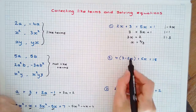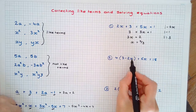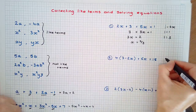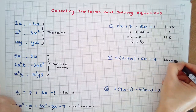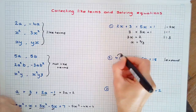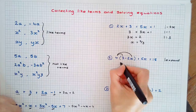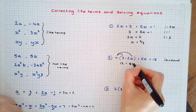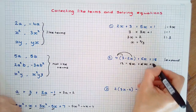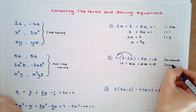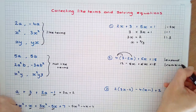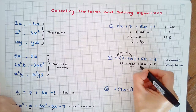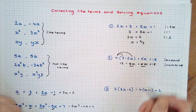Here we've got brackets and I can see that we're going to end up with like terms. First of all I'm going to expand the brackets using the distributive law. 4 times 3 is 12, minus 8x plus 6x equals 18. Now we can combine because we have the like terms 8x and plus 6x.